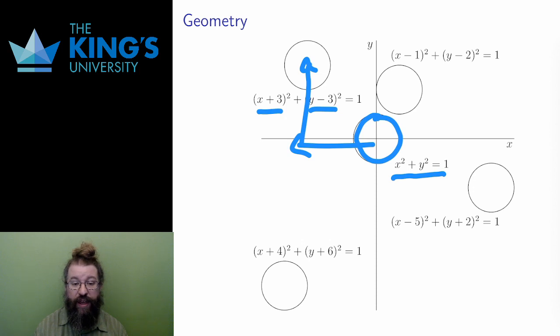If I replace x by x plus 4, and y by y plus 6, then to balance, I move four units in the negative x direction, left, and six units in the negative y direction, down.